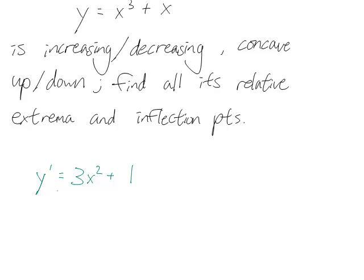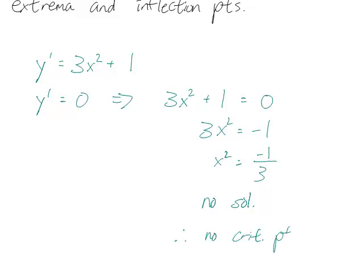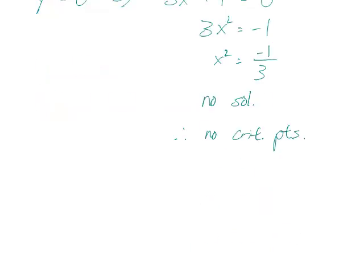We can find all the critical points of y by setting y prime equal to 0. That means 3x squared plus 1 equals 0, so 3x squared equals negative 1. Since x squared can't be a negative number, there are no solutions, and therefore no critical points. Remember that critical points also arise when the derivative is undefined, but 3x squared plus 1 is defined over all real numbers, so we have no critical points.